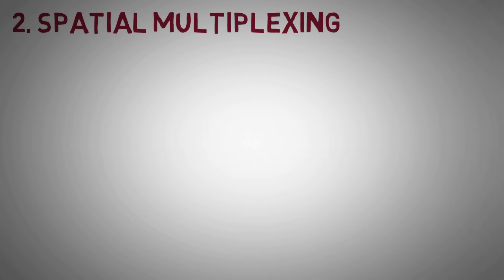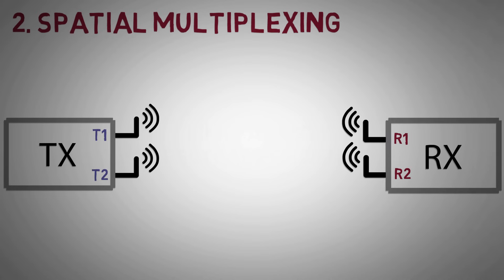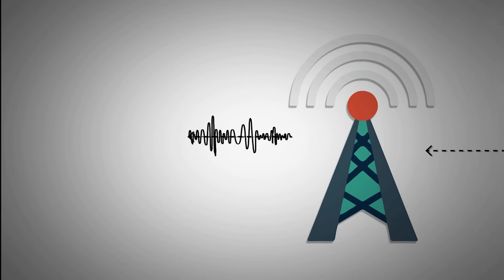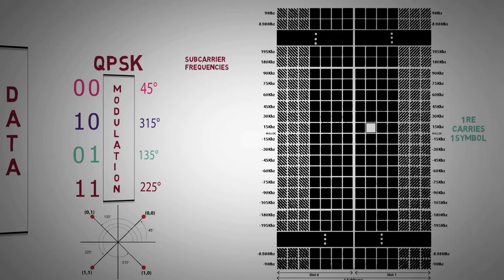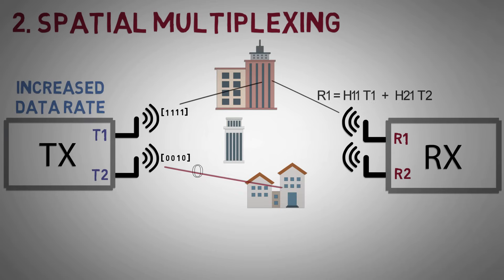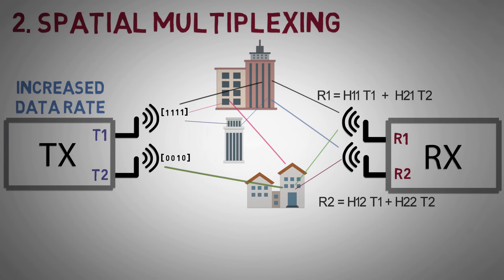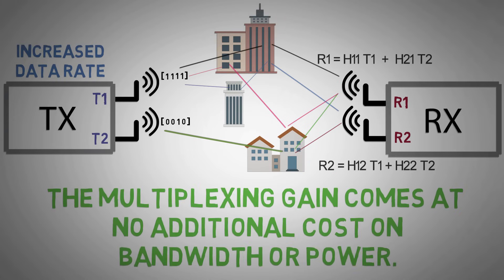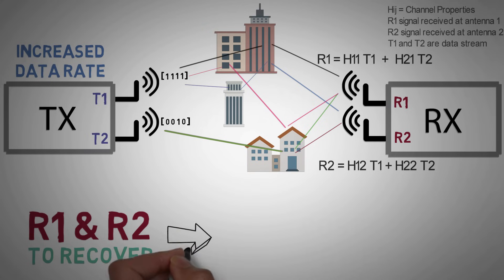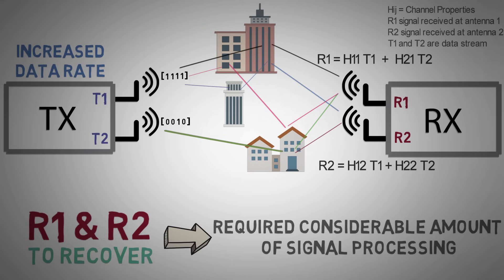In this technique, multiple antennas are used in transmitting and receiving, and each spatial channel carries independent information, thereby increasing the data rate of the system. This can be compared to the orthogonal frequency division multiplexing technique, where different frequency subchannels carry different parts of the modulated data. But in spatial multiplexing, if the scattering by the environment is rich enough, several independent subchannels are created in the same allocated bandwidth. Thus the multiplexing gain comes at no additional cost in bandwidth or power. To recover the data stream at the receiver, it is necessary to perform a considerable amount of signal processing.